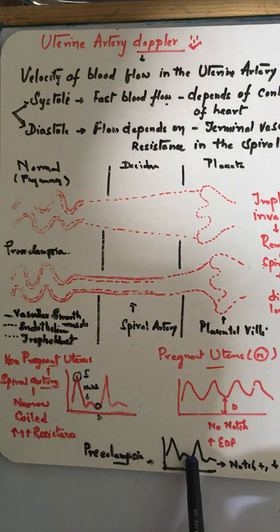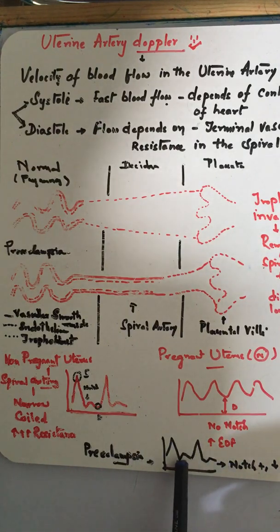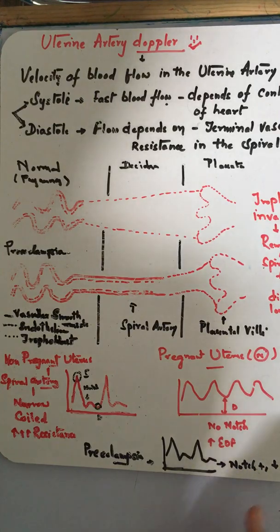In preeclampsia, due to incomplete spiral artery remodeling, the vessels will be narrow, decreased blood flow will be present, and there will be an early diastolic notch and increased end-diastolic flow.